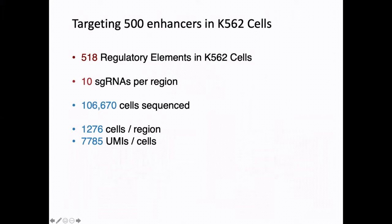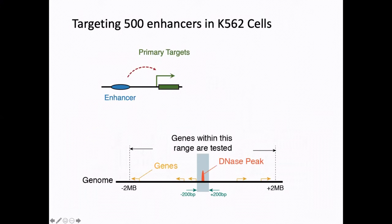We developed and applied this assay to about 500 enhancers in K562 cells. We designed 10 guides per region and sequenced a total of about 100,000 cells. We took two steps to analyze the data. First, we wanted to identify the primary target genes of those enhancers, focusing on the plus/minus two megabase region around any DNase hypersensitive site we targeted.